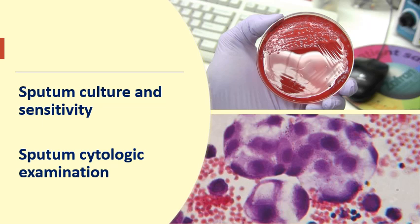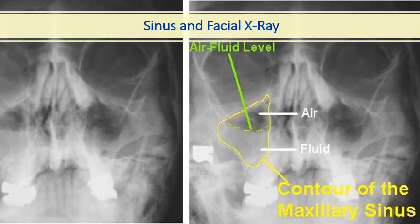Sputum culture and sensitivity identifies the organism and the antibiotic to treat it. Sputum cytologic examination — done under a microscope using a slide — examines cells and their components. Sinus and facial X-ray rules out deformities and identifies sinusitis; one example is the water's view X-ray, where fluid deposits in the maxillary sinuses signal infection.